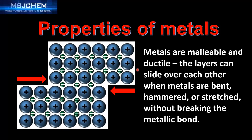The layers can slide over each other when metals are bent, hammered, or stretched without breaking the metallic bond. In this diagram you can see the layers sliding over each other, but the metallic bond remains intact.